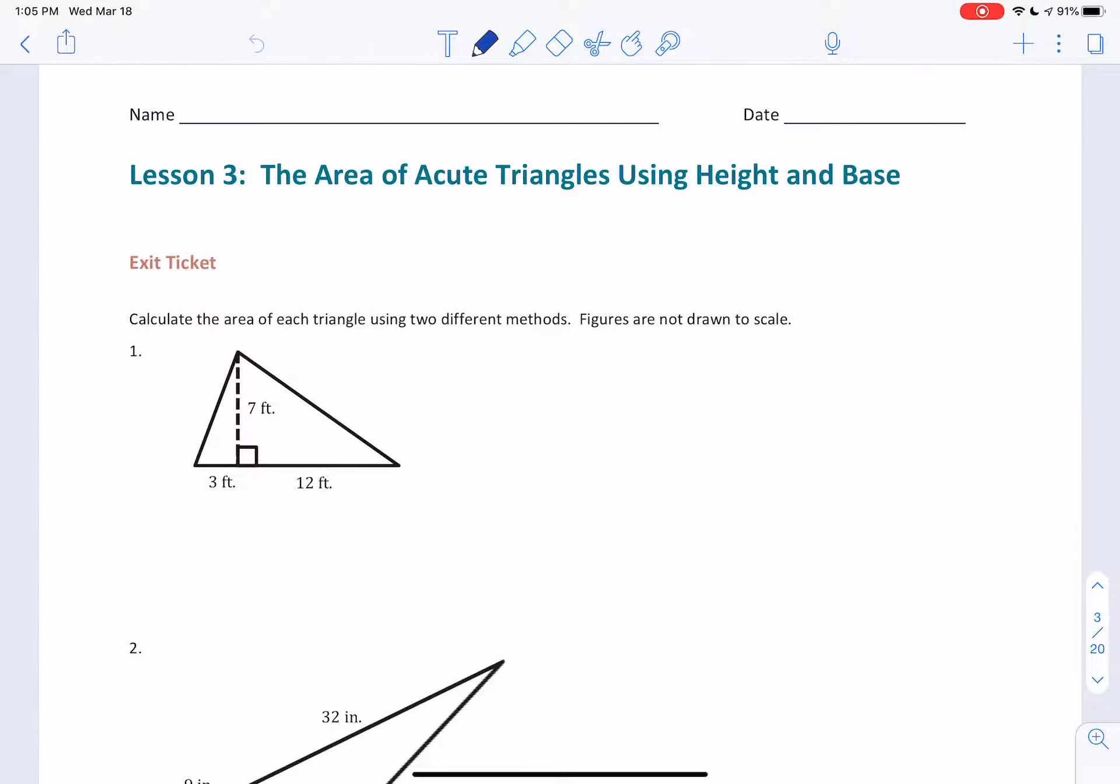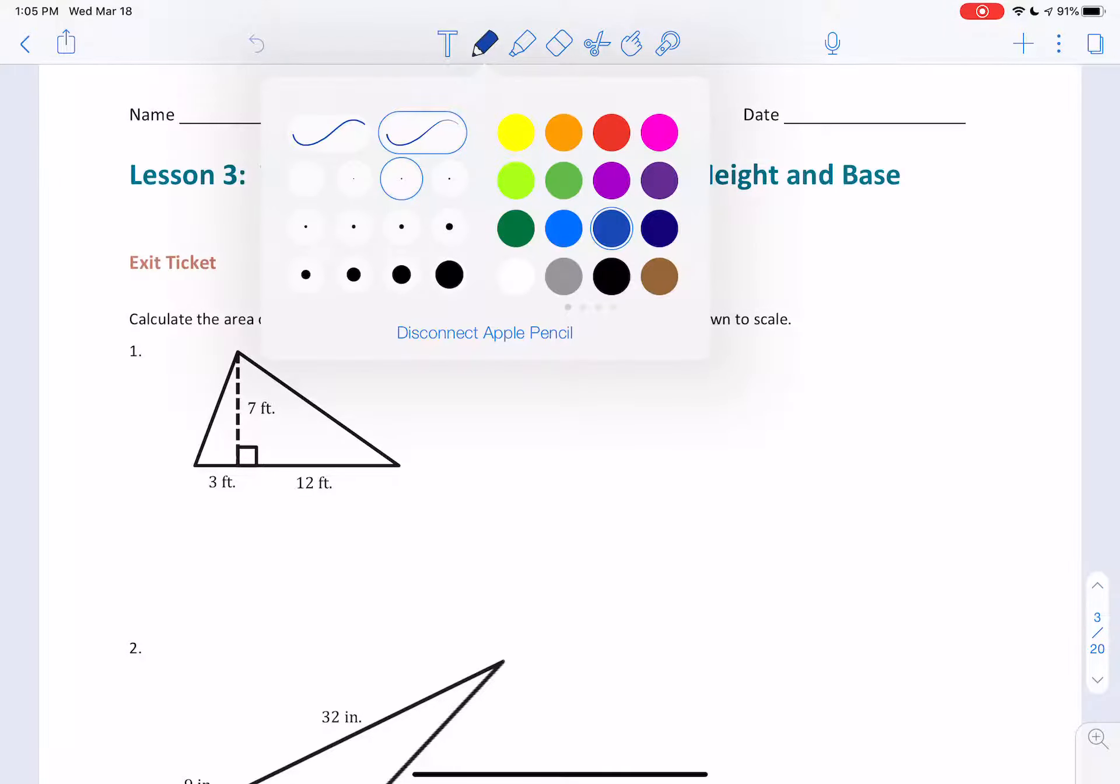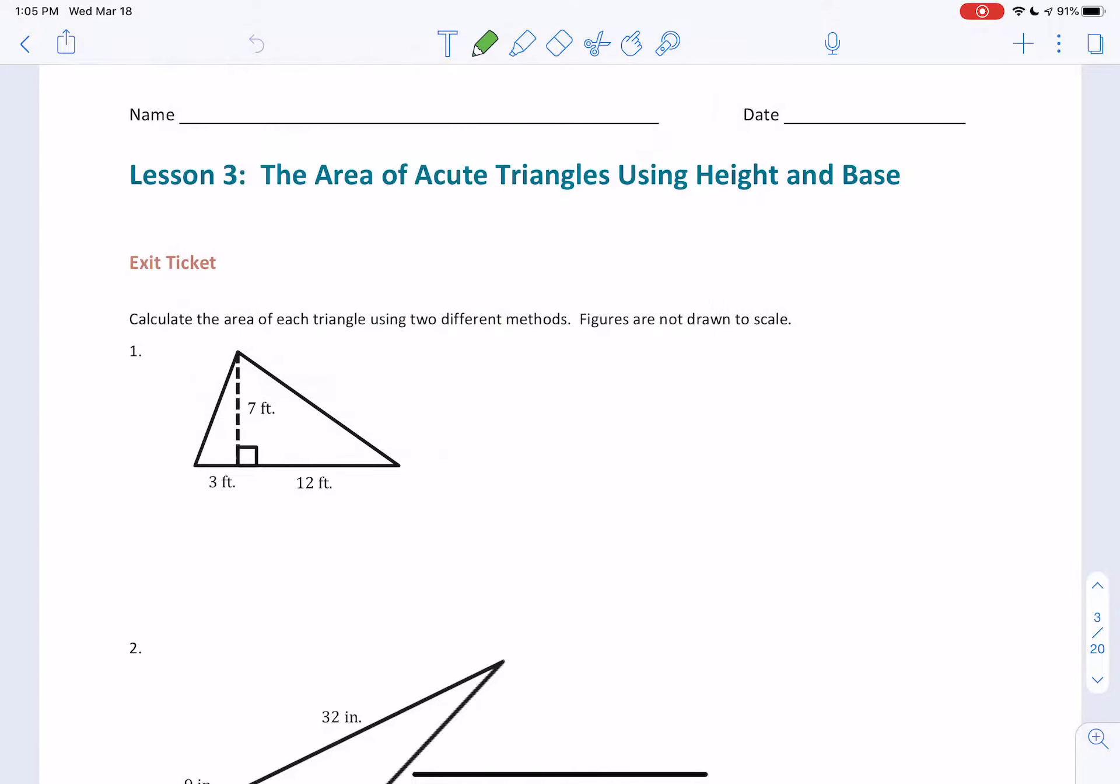So first of all, lesson 3, number 1. What we talked about in the lesson video is that we have basically two triangles here. If I want to find the area of this entire triangle, I could break it up into two different triangles. So this triangle, the green triangle, using the formula area equals base times height divided by 2, the base would be 3, the height would be 7, divide that by 2, and I would get 10.5.